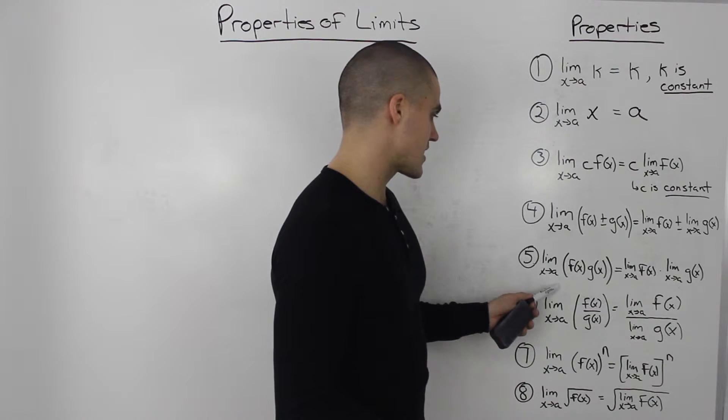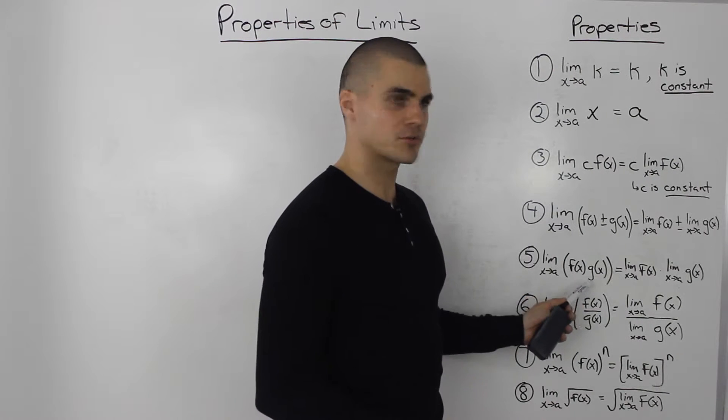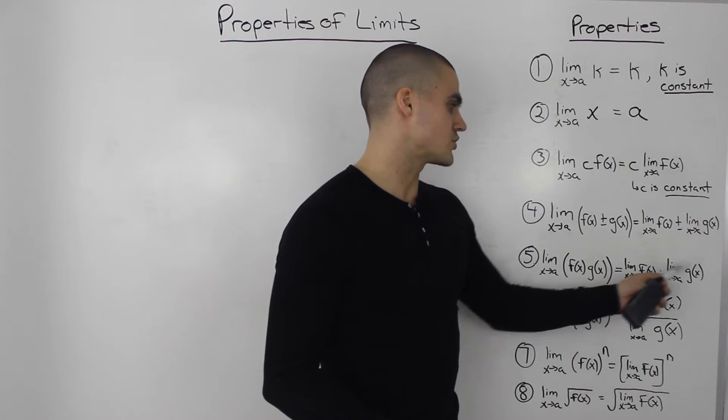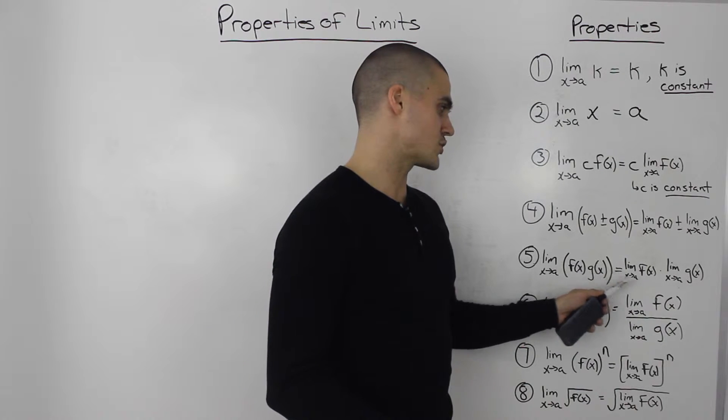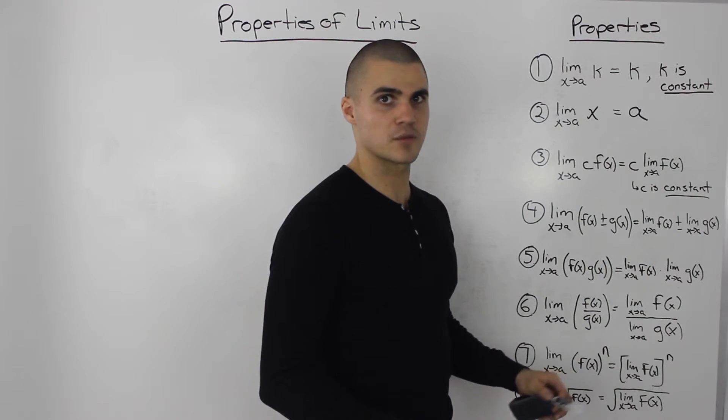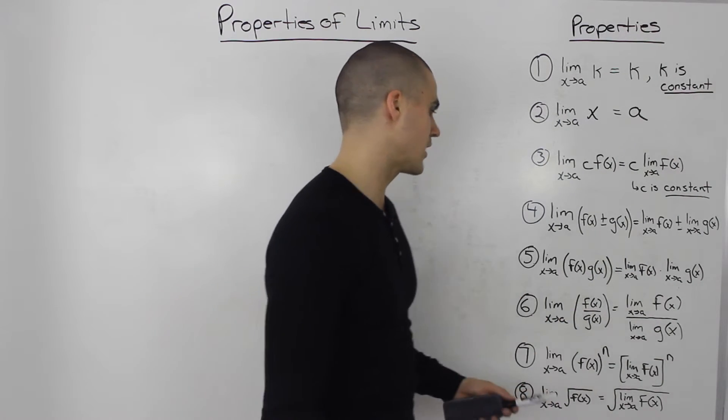Property five, limit as x approaches a of two functions multiplied together. Again you could just split up the functions, take their respective limits individually and then just multiply your results.